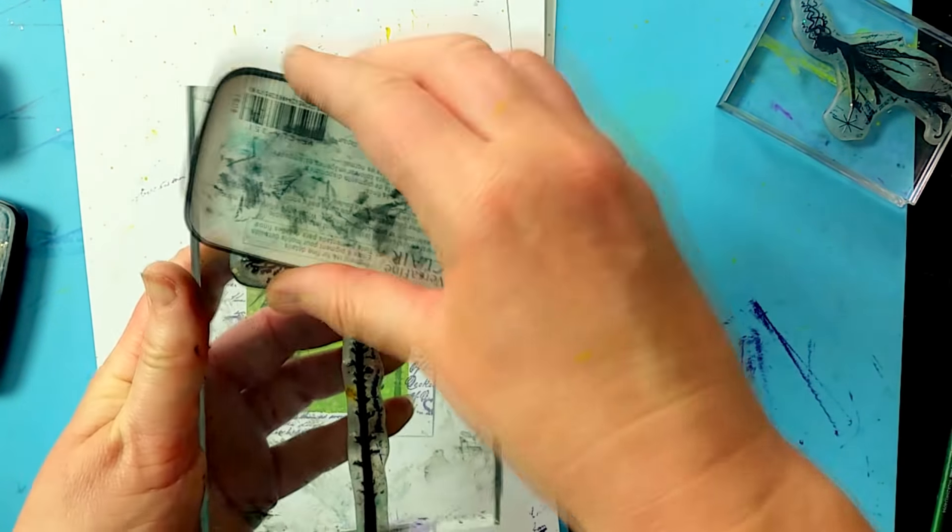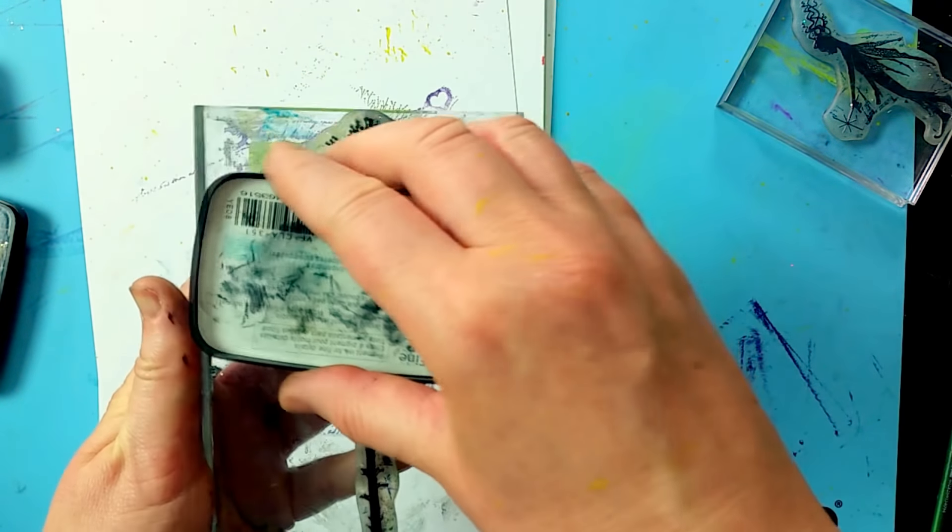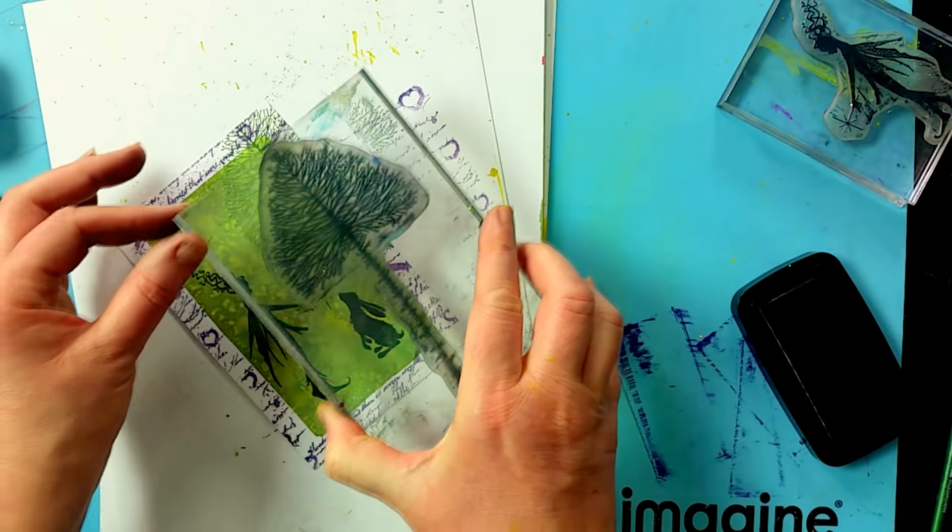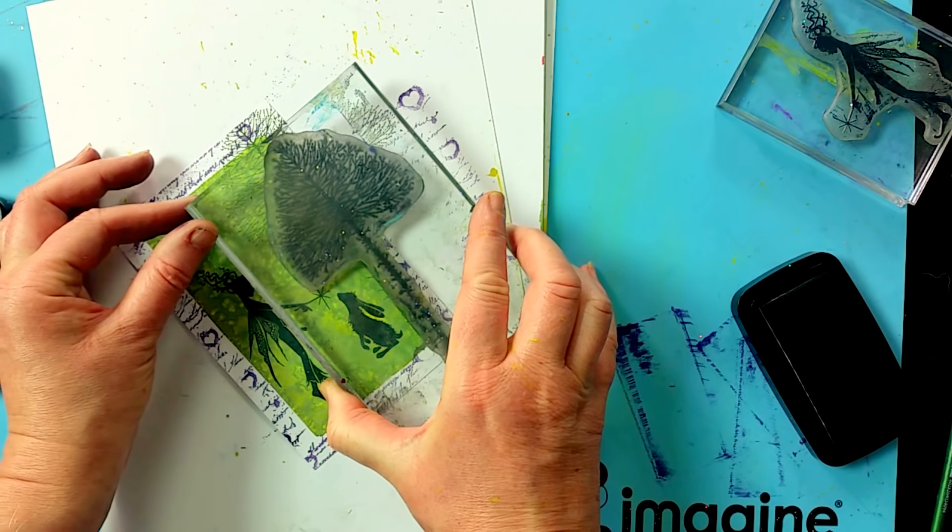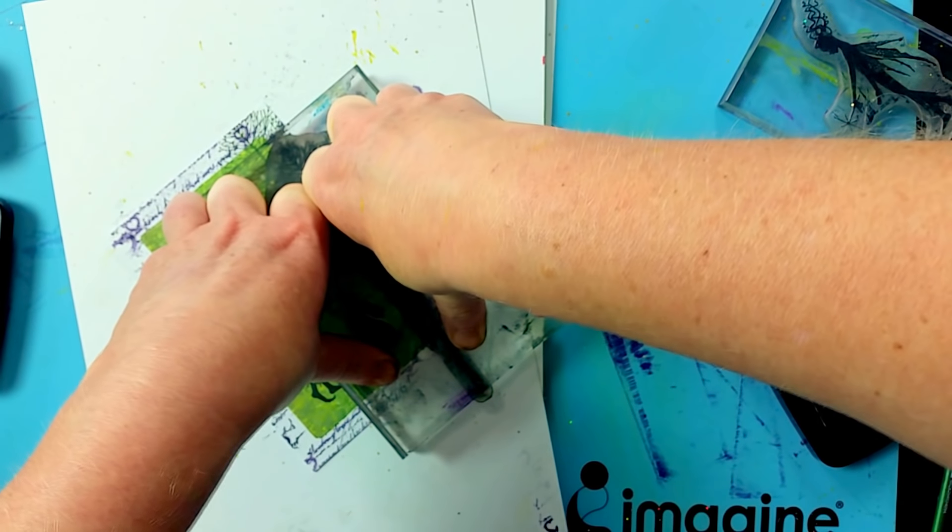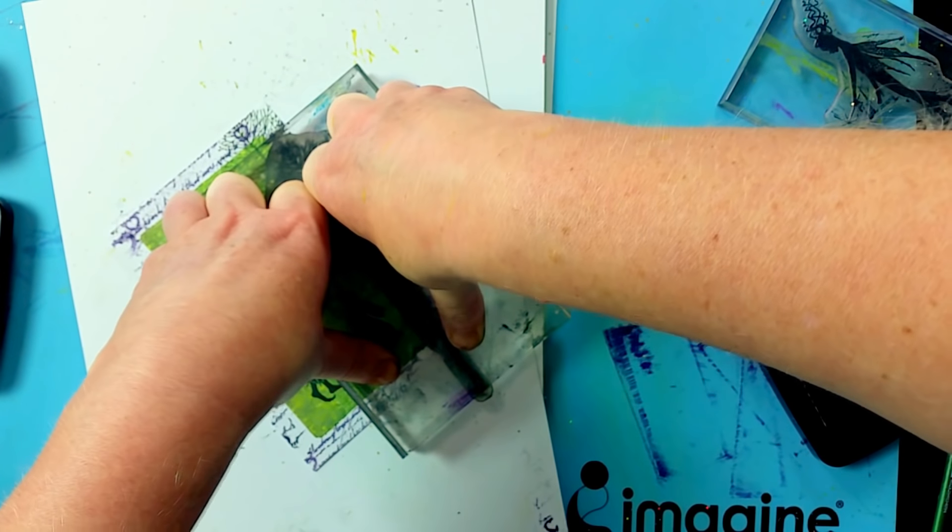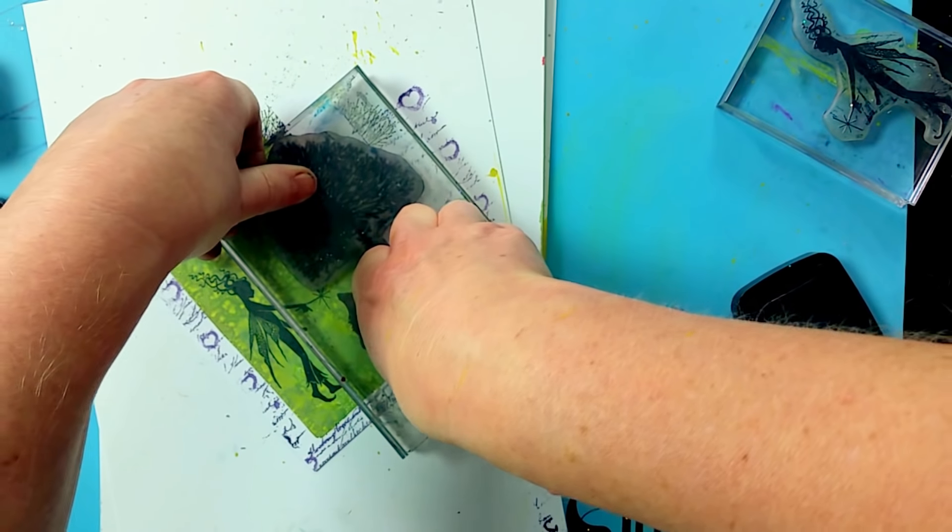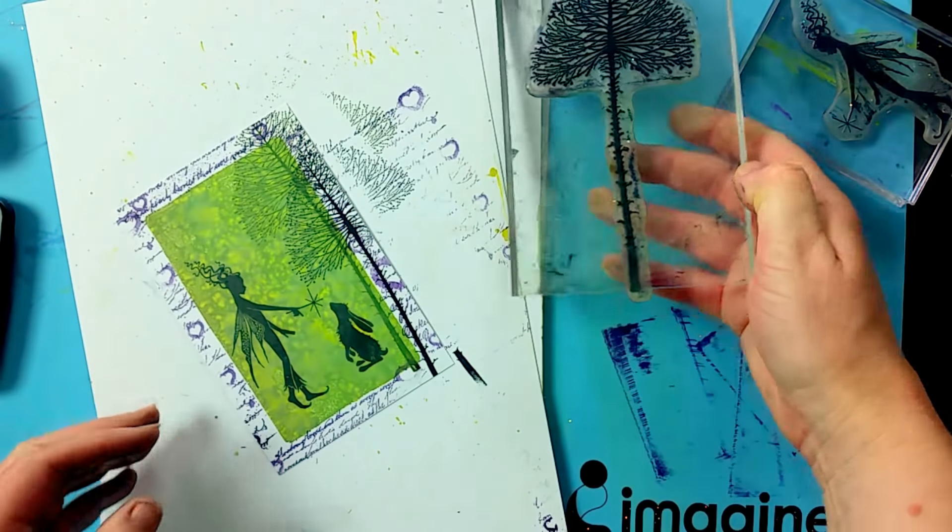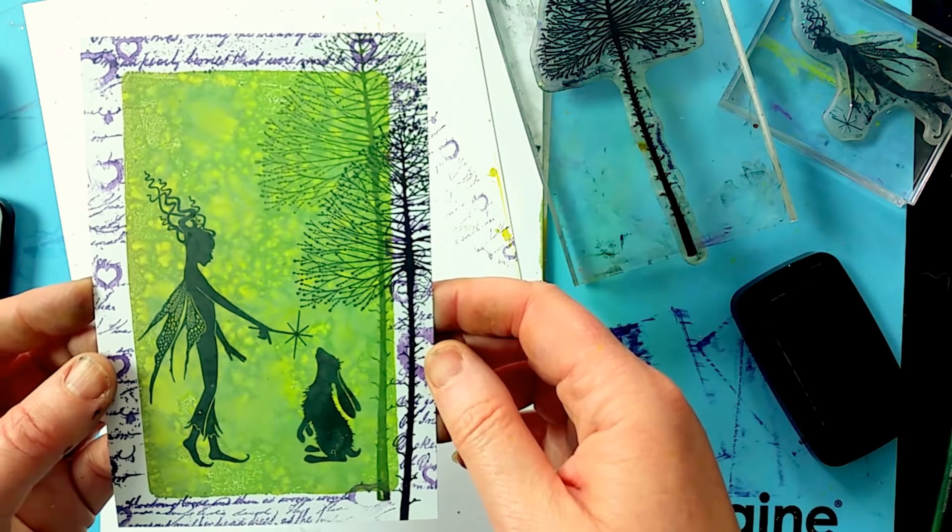Now I'm going to ink up in the black, the Nocturne. And I'm going to pop that down just a little bit nearer. And just by playing with color, you can create foregrounds and backgrounds, which are really nice. Can you see that?